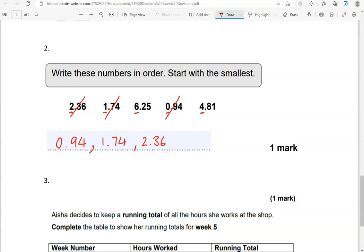And then, we have 4.81. And finally, we have 6.25.